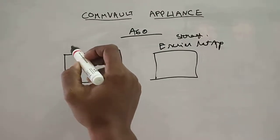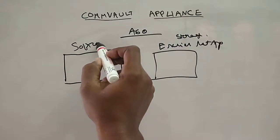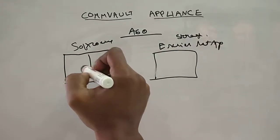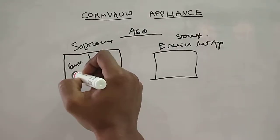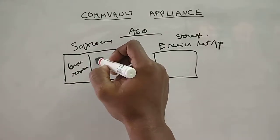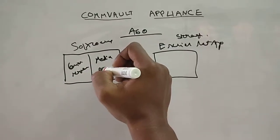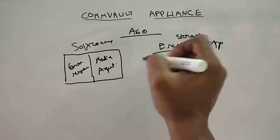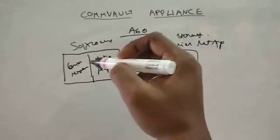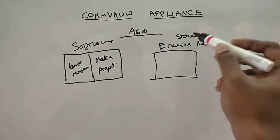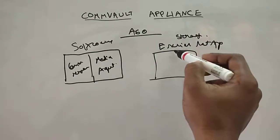We know that Commvault will give you a backup software where it consists of both CommServe and also the media agent. So software is already there. Now they are offering you the storage part, that is NetApp's E-series E2712, the storage that they offer along with A600.